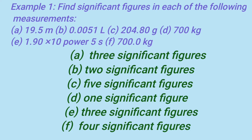Example B: 0.0051 liters. Example C: 5 significant figures. Example D: 700 kilograms — Rule number 4 — 1 significant figure. Example E: 1.90 × 10⁵ seconds — 3 significant figures. Example F: 700.0 kilograms — 4 significant figures.